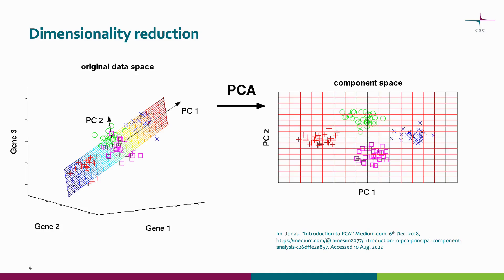However, there are still correlations between the highly variable genes, and we would only like to preserve the highest variation in the data for the clustering step. This is the goal of the PCA step. In PCA, we reduce the dimensionality by transforming the feature space with the highly variable genes into a lower dimensional feature space, where the first principal component captures the most variation in the data, the second PC the second most, and so on. In this new PCA space, the PCs can be considered as metagenes that are linear combinations of the highly variable genes.